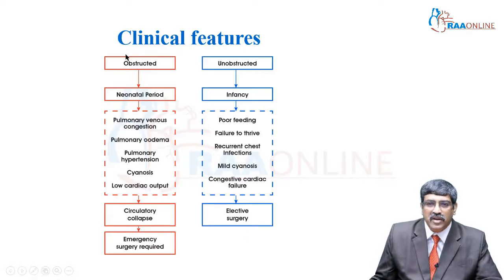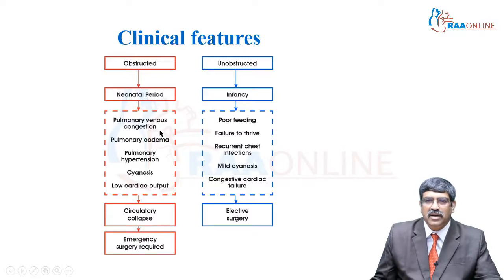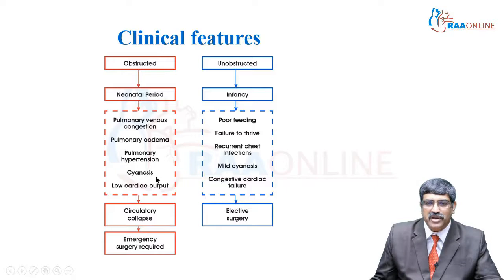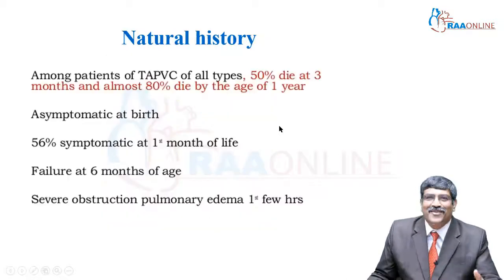Coming to obstructive TAPVC, it is usually diagnosed in the neonatal period. There is going to be pulmonary venous congestion, pulmonary edema, pulmonary hypertension, cyanosis, and low cardiac output, which leads to circulatory collapse, and emergency surgery is required.